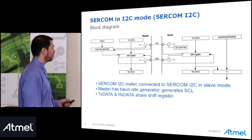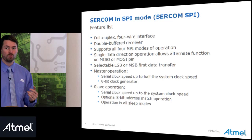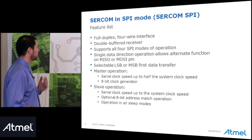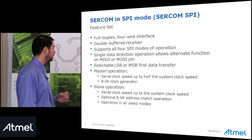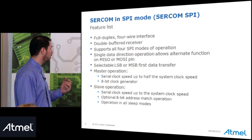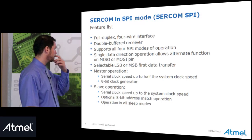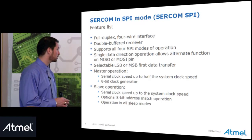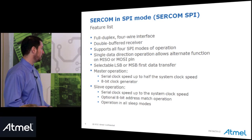On the slave side, before data is sent through from the RX data register there must be an address mask match. SPI is a full duplex four-wire interface with double-buffered receiver, supporting all four SPI modes of operation. Single data direction operation allows alternate function on the MOSI or MISO pins, and selectable least or most significant bit first data transfer. In master operation, serial clock speed is up to half the system clock speed — at 48 MHz CPU speed that is 24 megabits per second — with an 8-bit clock generator.